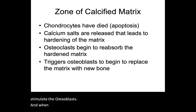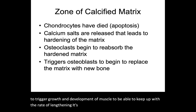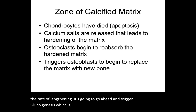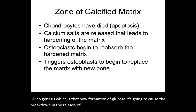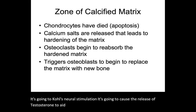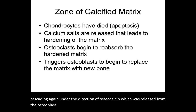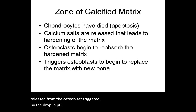When the osteoblasts are stimulated, they release osteocalcin, which triggers growth and development of muscle to keep up with the rate of lengthening, triggers gluconeogenesis (the new formation of glucose), causes the breakdown and release of glucose for cell respiration and ATP production, causes neural stimulation, and causes the release of testosterone to aid in vitamin D production. All of these things begin cascading under the direction of osteocalcin, released from osteoblasts triggered by the drop in pH from the osteoclasts releasing acid phosphatase.